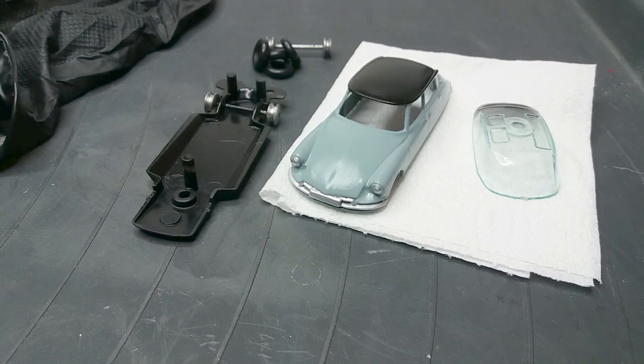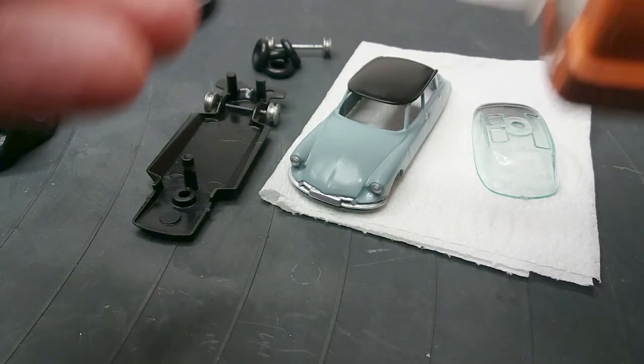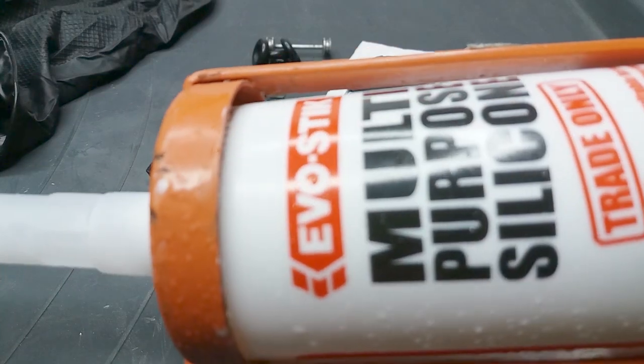Okay so these are all the components of the car laid out and the last thing I'm going to do now before assembling it is just stick the glass into the roof of the car.